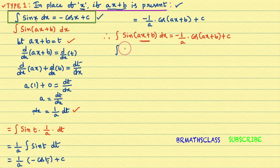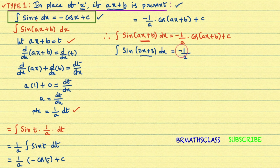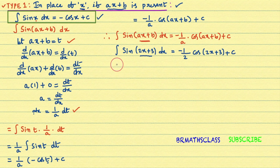For example: integral of sin(2x+3) dx. We know integral of sin(x) dx; in place of x, ax+b is present. Our answer starts with 1 divided by the x-coefficient. The x-coefficient is 2. Integral of sin(x) dx is minus cos(x), so we write minus cos(2x+3) divided by 2, plus c.